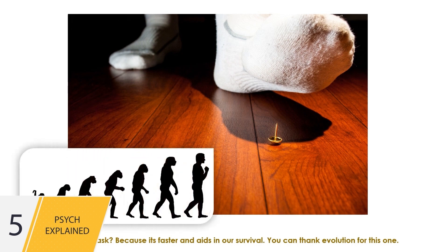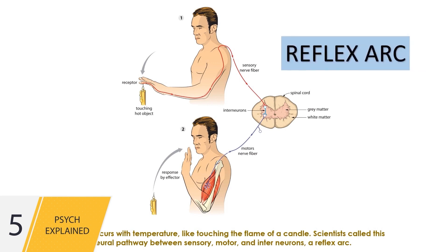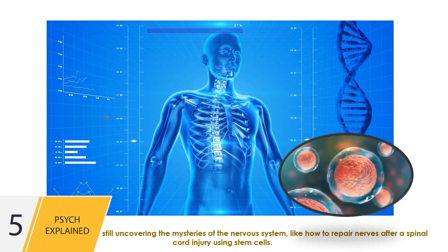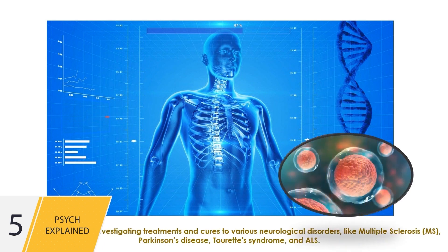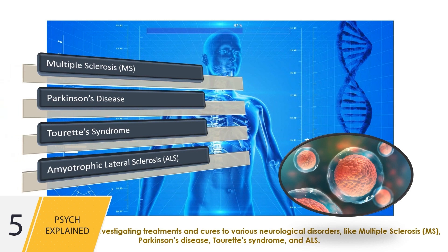This also occurs with temperature, like touching the flame of a candle. Scientists call this neural pathway between sensory, motor, and interneurons a reflex arc. Today, researchers are still uncovering the mysteries of the nervous system, like how to repair nerves after spinal cord injury using stem cells. Researchers are also investigating treatments and cures to various neurological disorders, like multiple sclerosis, Parkinson's disease, Tourette syndrome, and ALS.